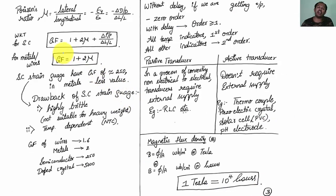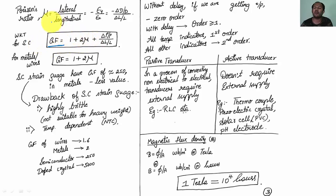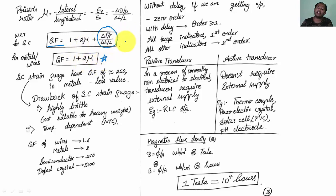Poisson's ratio mu is defined as minus lateral variation divided by longitudinal variation, which equals minus epsilon_y divided by epsilon_x, or minus (delta D / D) divided by (delta L / L). For a semiconductor, the gauge factor is given by 1 + 2mu + (delta rho / rho) / (delta L / L). In the case of metals or wires, the piezoresistive term (delta rho / rho) is very low and is neglected, so gauge factor equals 1 + 2mu.